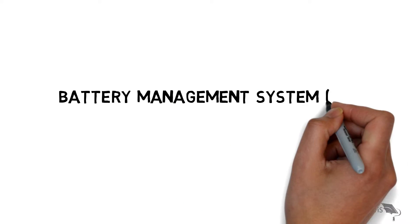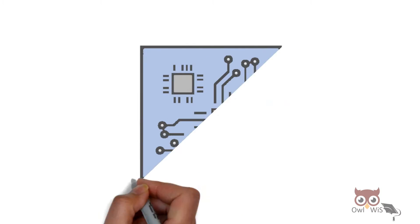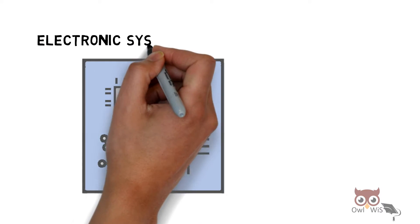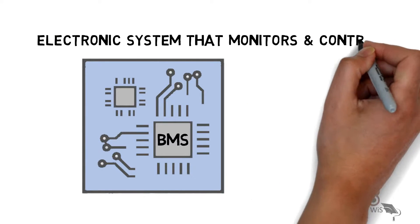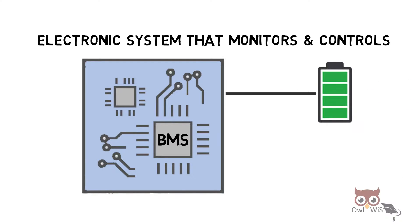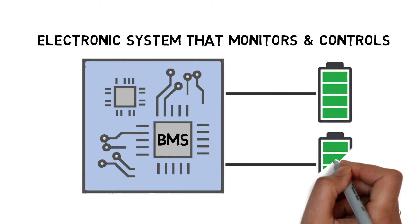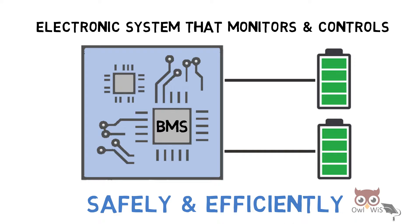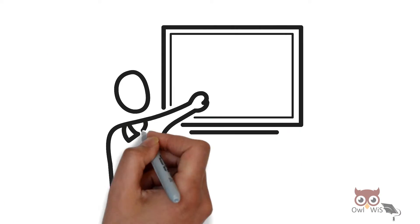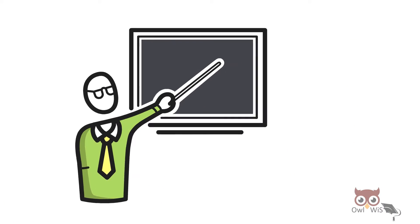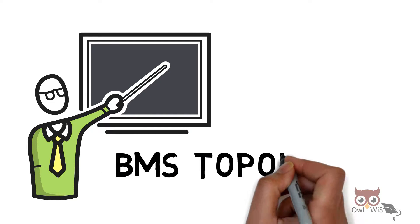Battery Management System BMS is an electronic system that monitors and controls battery cells so that they can be operated safely and efficiently. In today's video, let us understand BMS Topologies.